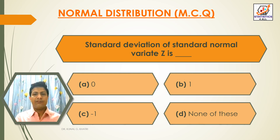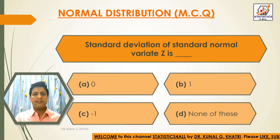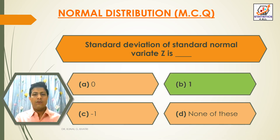Next question: Standard deviation of standard normal variable Z is — Option A: 0. Option B: 1. Option C: minus 1. Option D: none of these. The answer is Option B — 1. The standard deviation of standard normal variable Z is 1.